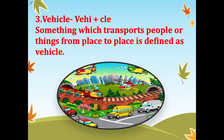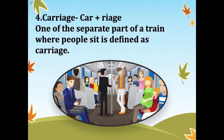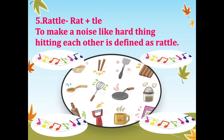Vehicle — something which transports people or things from place to place is defined as a vehicle. Carriage — one of the separate parts of a train where people sit is defined as a carriage. Rattle — to make a noise like hard things hitting each other is defined as rattle.